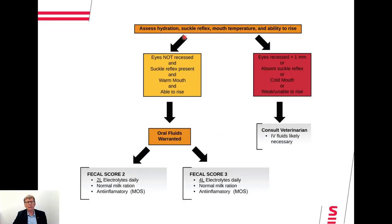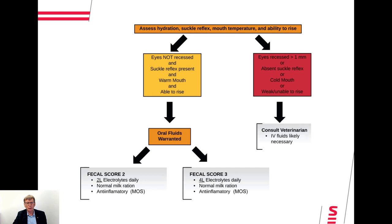We assess hydration, suckle reflex, mouth temperature, and ability to rise. If the eyes are not recessed, the mouth is still warm, and the calf is able to rise, go with oral fluids — 2 liters for a score of 2, and 4 liters for a score of 3 — in addition to the normal milk and the anti-inflammatory meloxicam oral solution. On the right-hand side, if the eyes are deeper in the socket, the suckle reflex is not as good, the mouth is cold, or the calf is weak and unable to rise, consult with your veterinarian — IV fluids may be necessary.